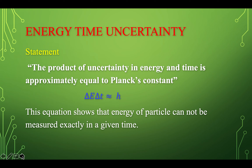The second form of the uncertainty principle is energy-time uncertainty. According to this, the product of uncertainty in energy and uncertainty in time is approximately equal to Planck's constant. This equation shows that the energy of a particle cannot be measured exactly in a given time.